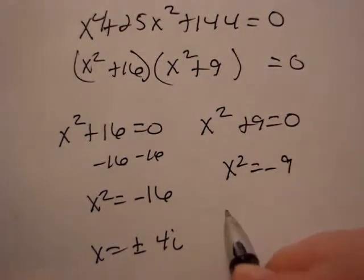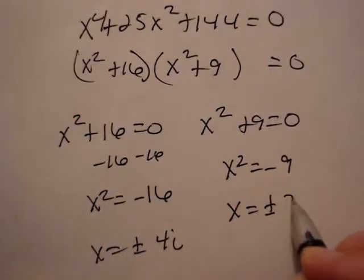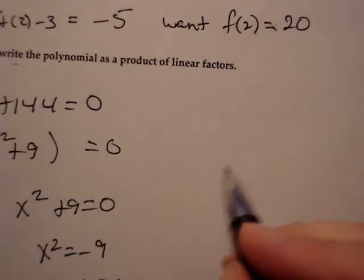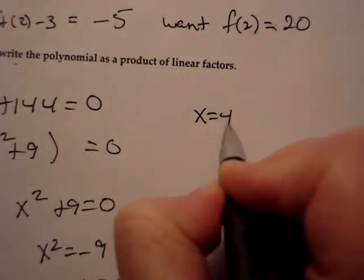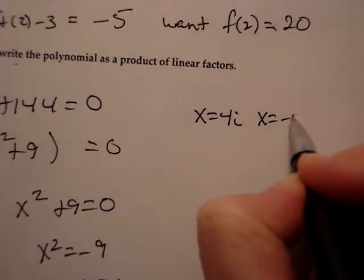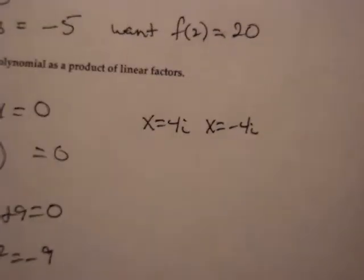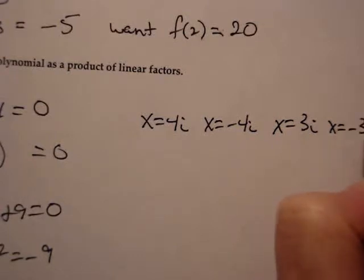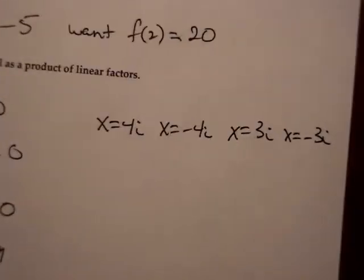x squared equals negative 9. That means that x is equal to plus or minus 3i. Okay, now I'm going to come over here. We're going to see what that tells us. So what I've got is a list: x equals 4i, x equals negative 4i, x equals 3i, and x equals negative 3i are my four zeros. But remember...